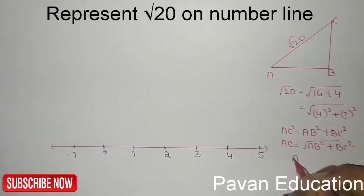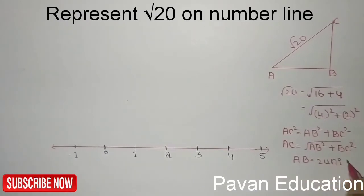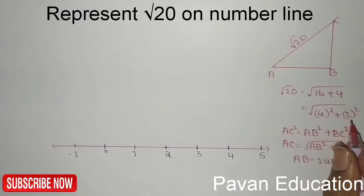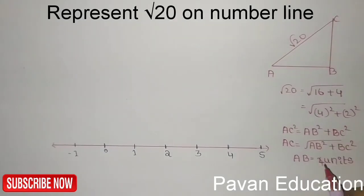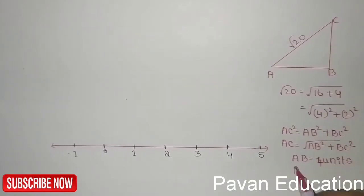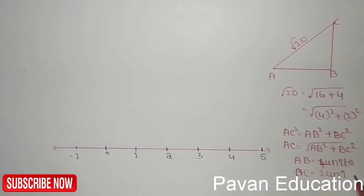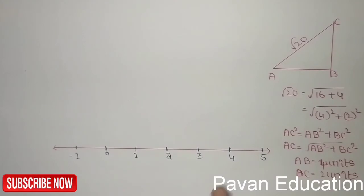So AB is 4 units and BC is 2 units. Now draw the same right angle triangle on the number line. First we want to draw the perpendicular here. The base AB is 4 units.